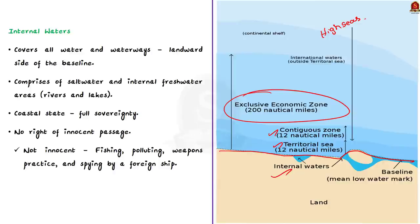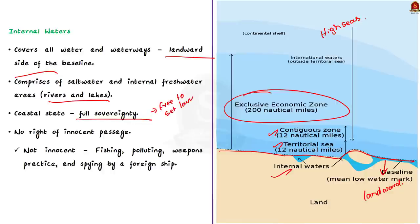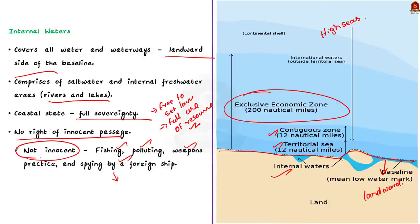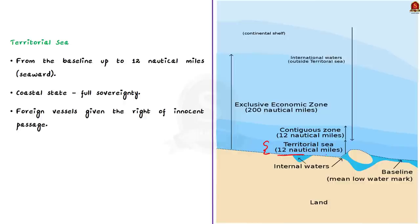Let us briefly see about some of these areas. First comes internal waters — this area covers all the water and waterways on the landward side of the baseline, comprising saltwater areas and internal freshwater areas such as rivers and lakes. In internal waters, the coastal state has full sovereignty and is free to set laws and regulate the use of any resources. Crucially, foreign vessels have no right of passage within internal waters — the right of innocent passage does not apply here. The right of innocent passage means passage that is not prejudicial to the peace, good order or security of the coastal state. Therefore, fishing, polluting, weapons practice and spying by foreign ships are not considered innocent.